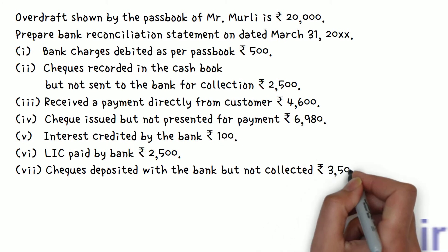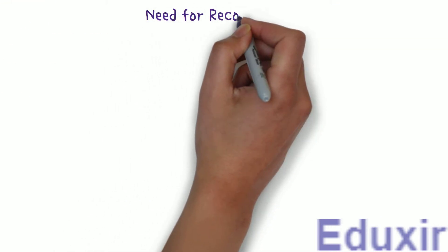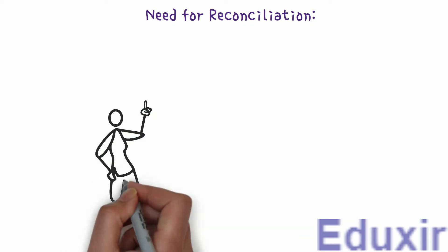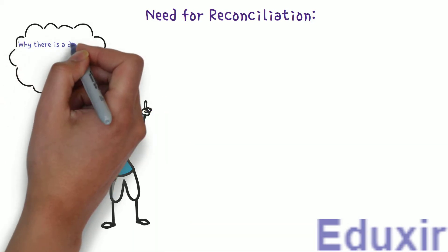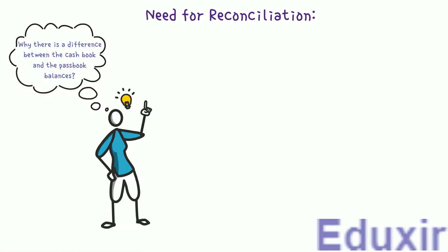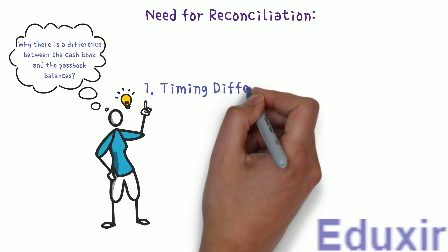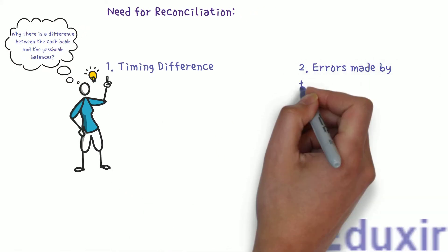Before we proceed with the analysis of these particulars, let us first recap about why there is a need for reconciliation. By preparing the bank reconciliation statement, we get an idea about why there is a difference between the cashbook and the passbook balances. The difference could be due to timing differences in recording transactions, or errors made by the business or the bank.